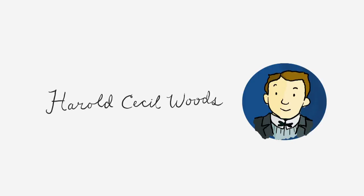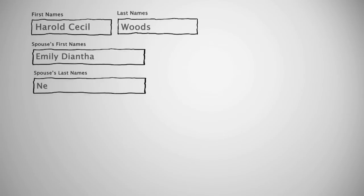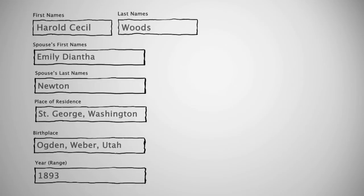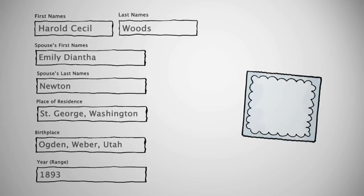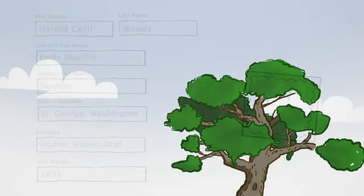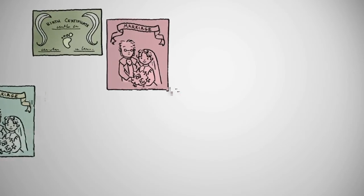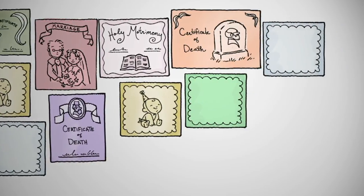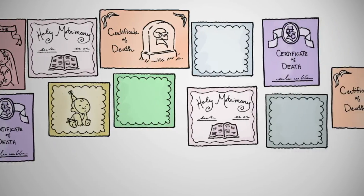Now, what if I entered all of the information that I knew all in a single search — his wife's name, his place of residence, his birthplace and birth date, all at the same time? I only find one record about my ancestor. It's my least productive search. Why is that? It's because the search engine is trying to find records with all of that information, but none of the records have all of the information — they each just have bits and pieces.